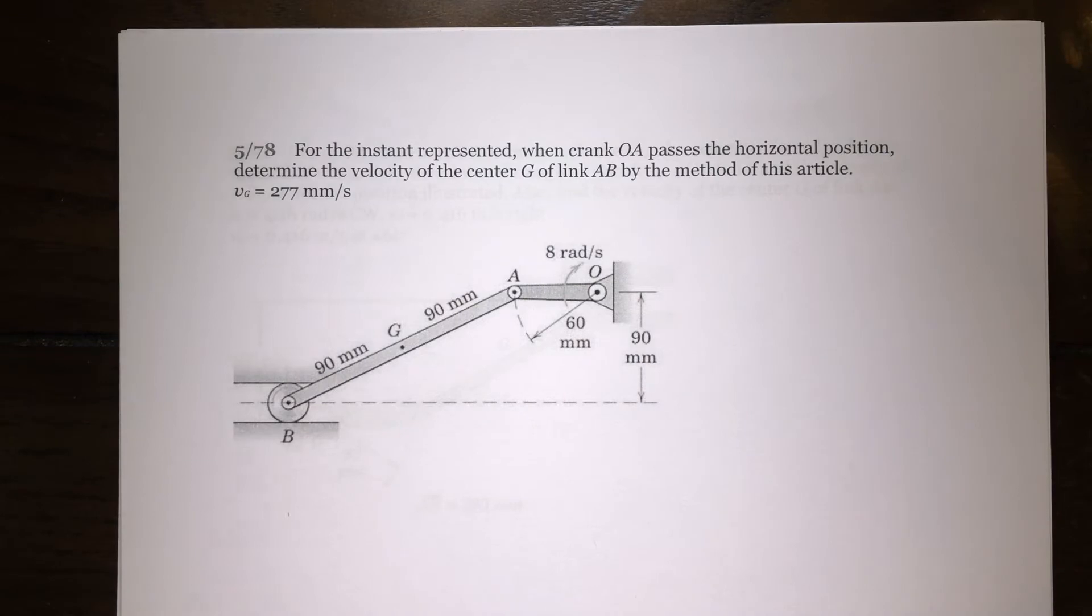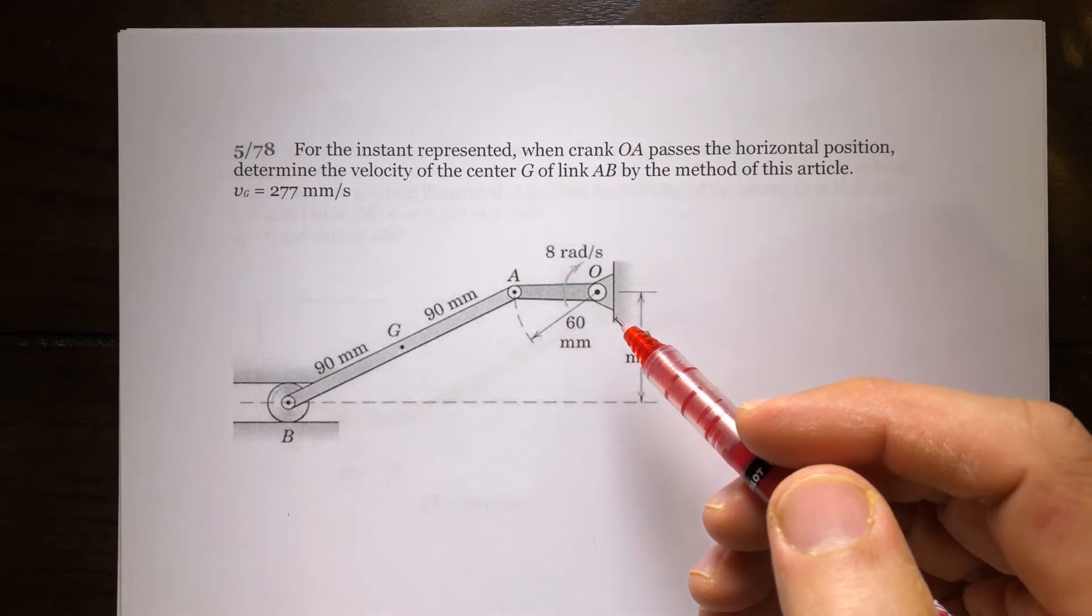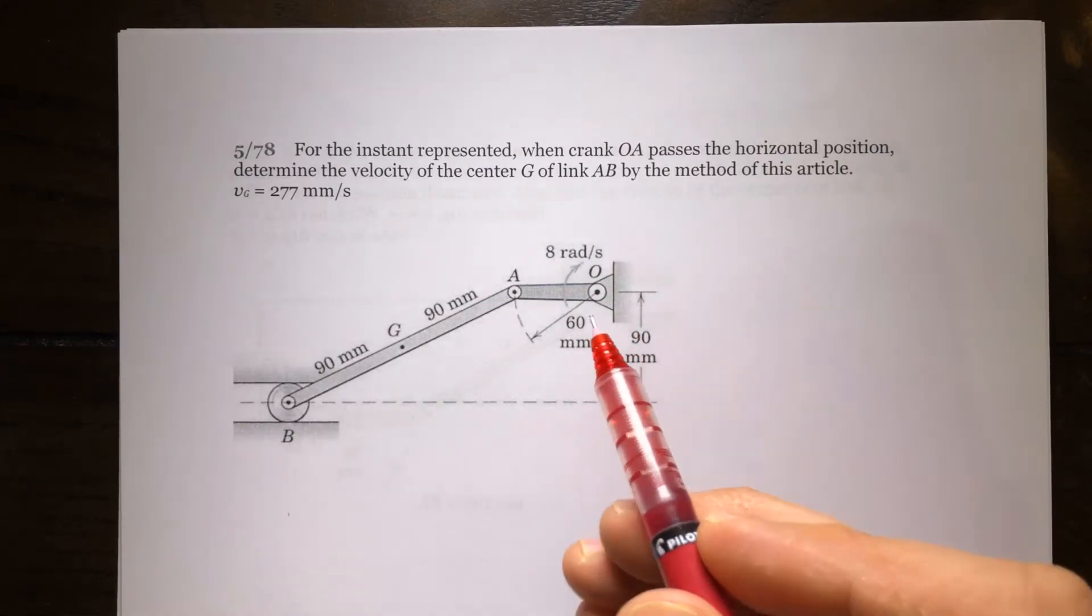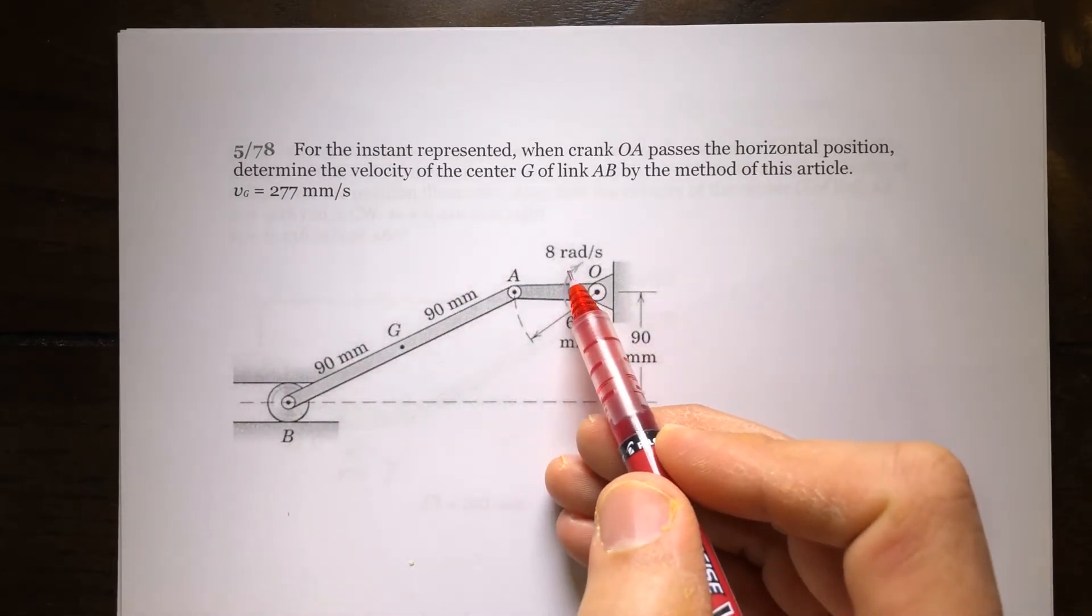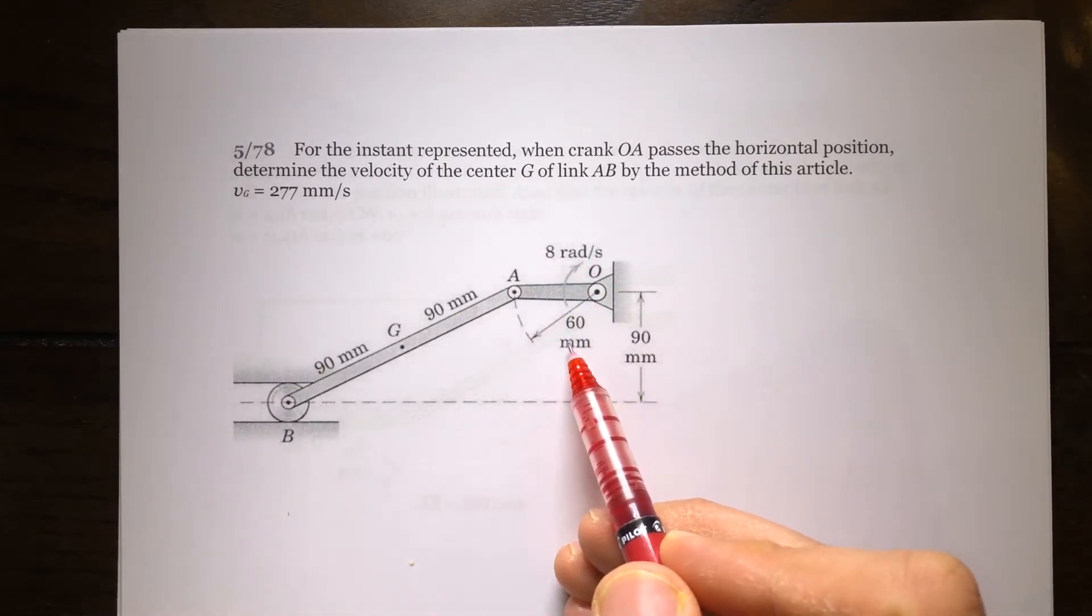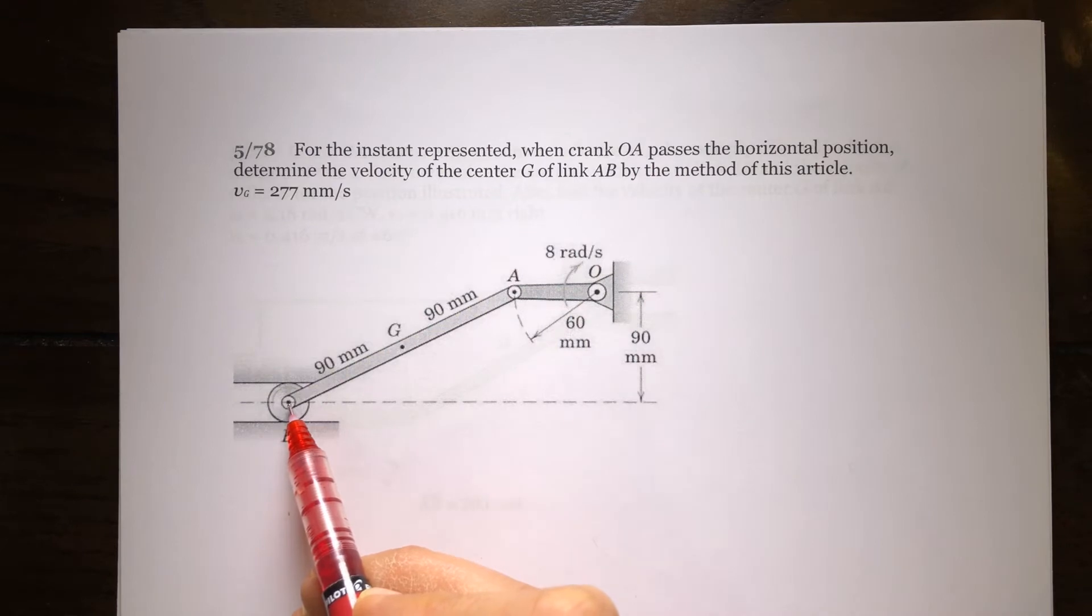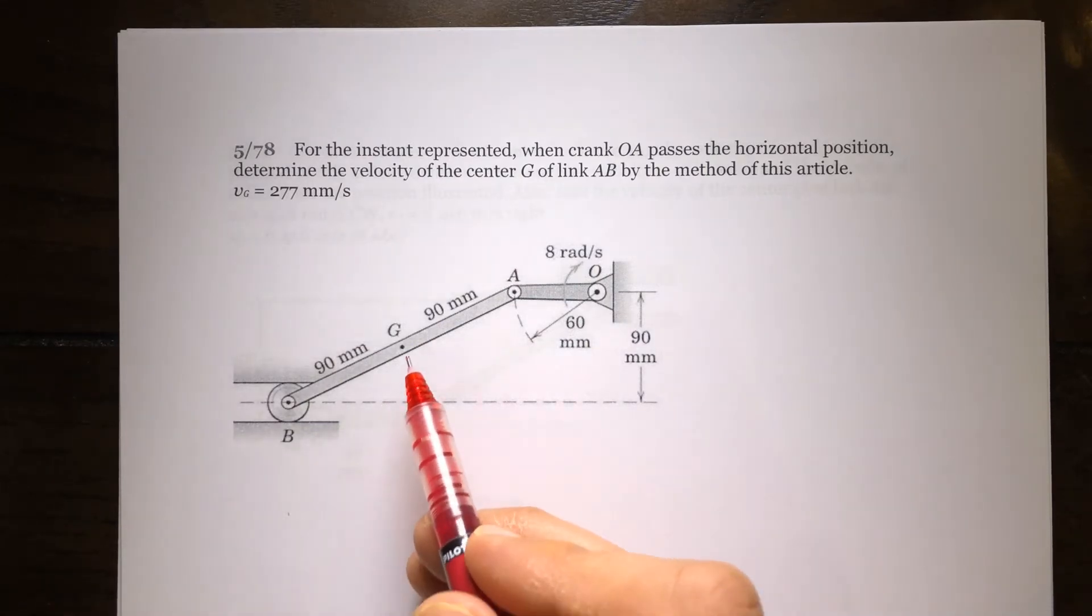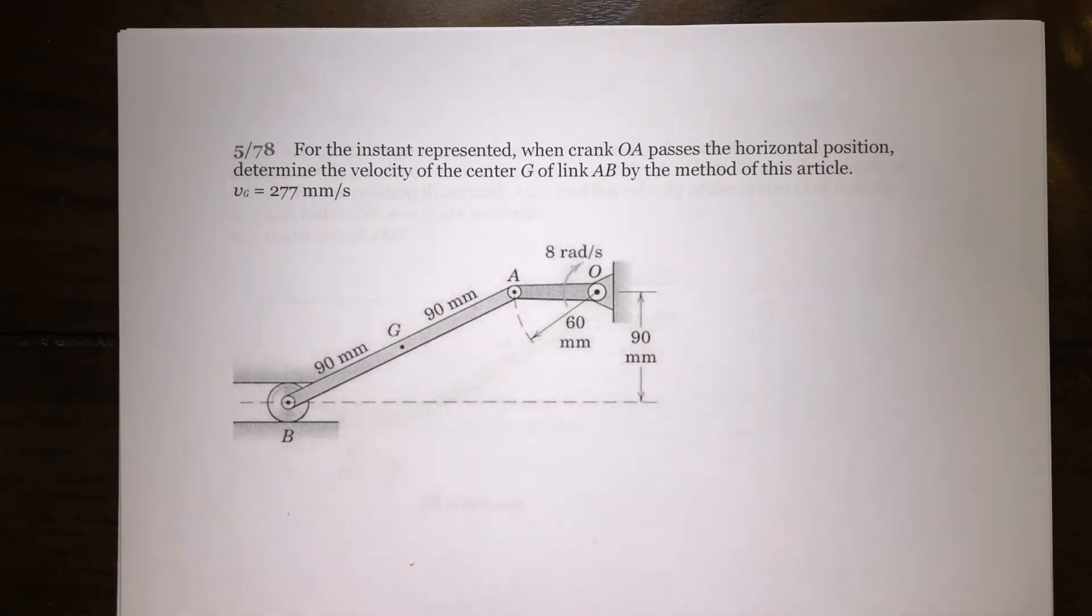Problem 78, Chapter 5. We're going to use instantaneous center of zero velocity for this problem. Here we have two links. The first one is pinned to the ground at point O and is rotating clockwise at 8 radians per second. The length is 60mm. The other link is pinned to the first one at A, and at B we have a roller moving in the horizontal direction. The question is: what is the velocity of point G, the center of AB?